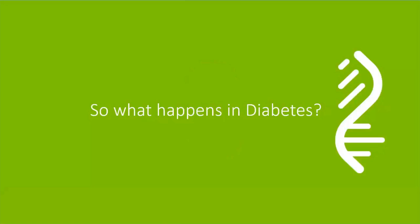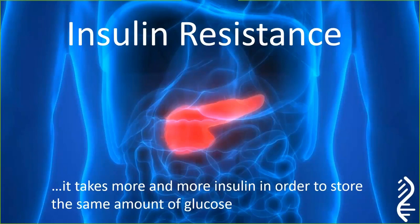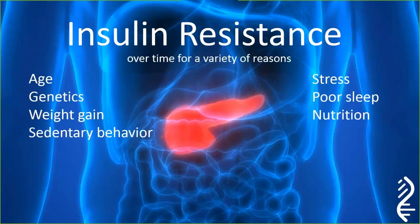So what happens in diabetes? In type 2 diabetes, the process is insulin resistance — insulin is not working as well, so it takes more and more insulin to store the same amount of glucose. Insulin resistance can happen for a variety of reasons: it happens with age, with genetics, with weight gain, with sedentary behavior, with stress, with poor sleep, with nutrition. For most people it's a combination of all of the above.